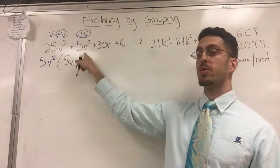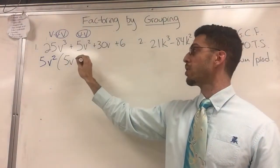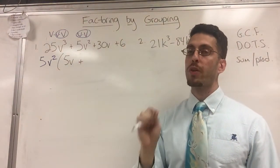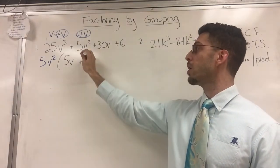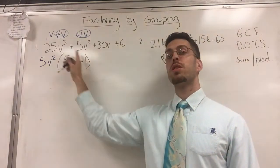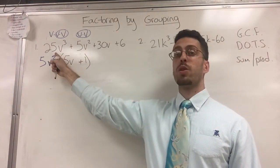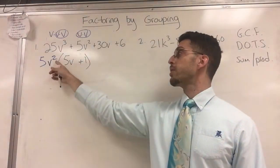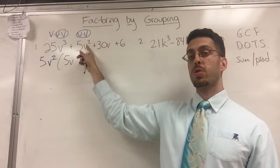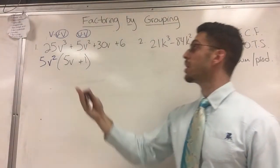If I divide this by 5V², it's gone. You're left with nothing. But you don't write nothing. You don't write zero. You have to write one. Well, if you don't believe me, use the distributive property to check your work. 5V² times 5V gives you the 25V³. 5V² times 1 gives you back the 5V². You need that. You need that 1.